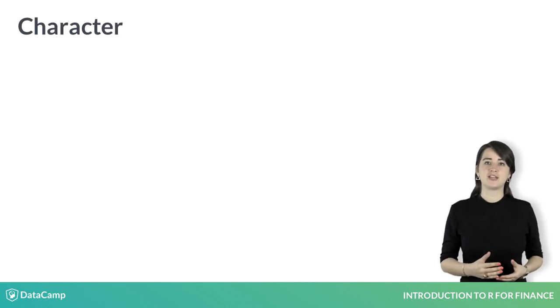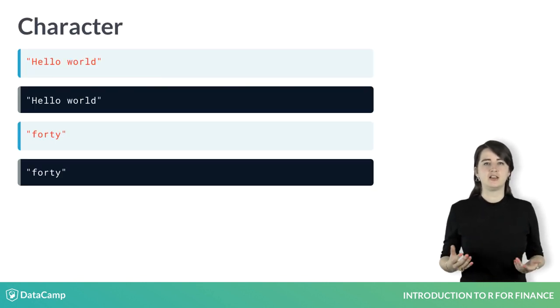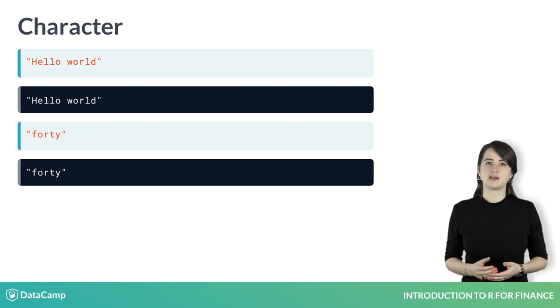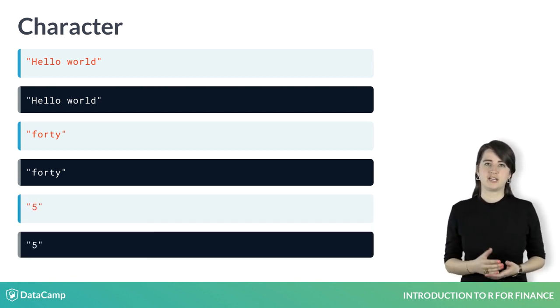Characters, also called strings, are text values such as hello world or 40. Character data could be a sequence of names or categories for your data, or even credit ratings for bonds. Note the quotation marks telling R that you are giving it character data. Even numbers can be stored as character data if you put it in quotation marks.